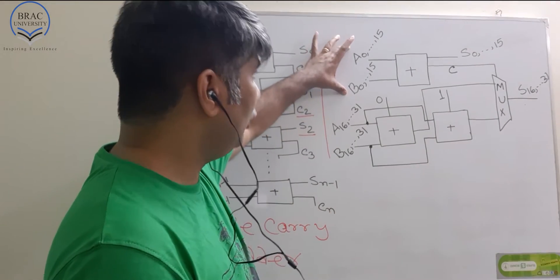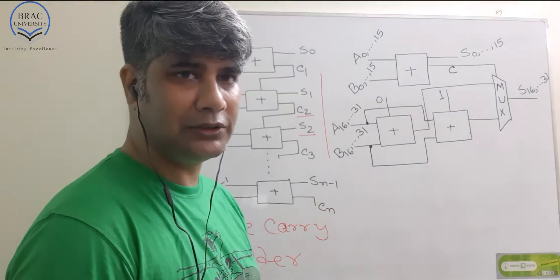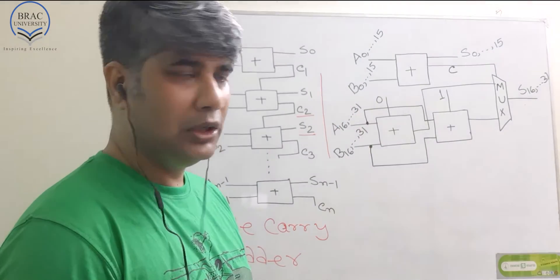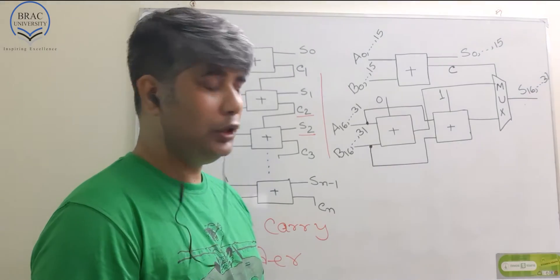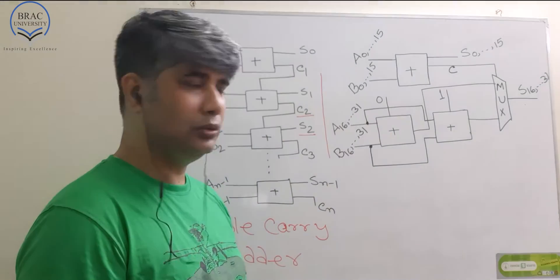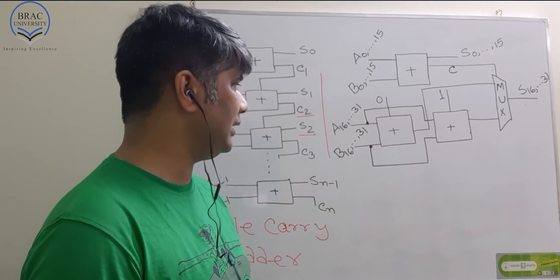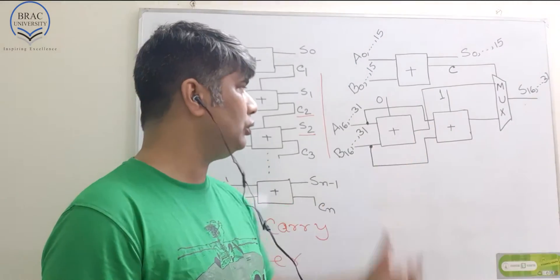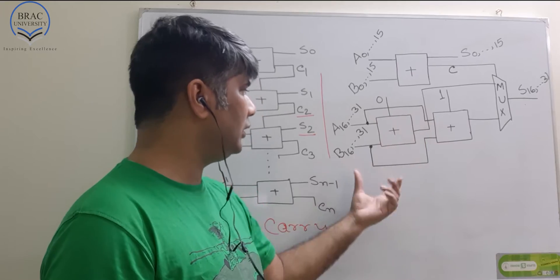We have given lower order 16-bit to this adder. Now, we have higher order 16-bit remaining. Let's deal with the higher order 16-bits of these two values. That means from A16 to A31, B16 to B31. In the upper part, we only use one adder, but in lower part, we use two adders. If you look carefully, you would see that both these adders are dealing with same values A16 to A31, B16 to B31. Both these adders are dealing with same value. Why do we have this? What is the purpose of having these two adders? We are dealing with the same inputs.